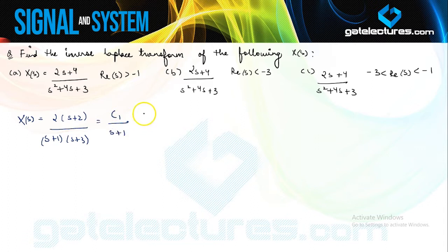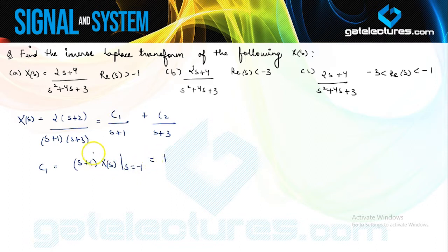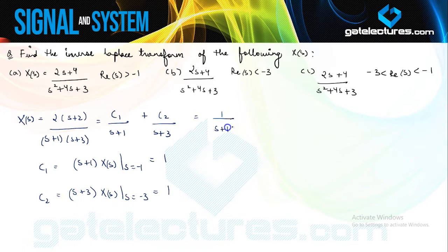This function has two simple poles. To find C1, multiply the complete function with (S + 1) and set S equal to minus 1, which gives us 1. Similarly C2 equals 1. So X of S equals 1/(S + 1) plus 1/(S + 3). The inverse Laplace transforms of both of these functions are known to us separately, and depending on the given ROC we can find the inverse Laplace.